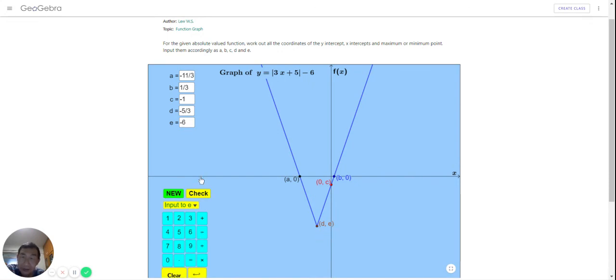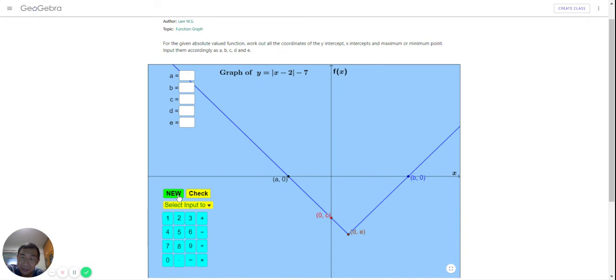Okay, now we are ready to check. Let's check the answers. Click on check. There, they're all correct. And we can move on to the new question by clicking on new. This ends the video on how to use this self-review activity.